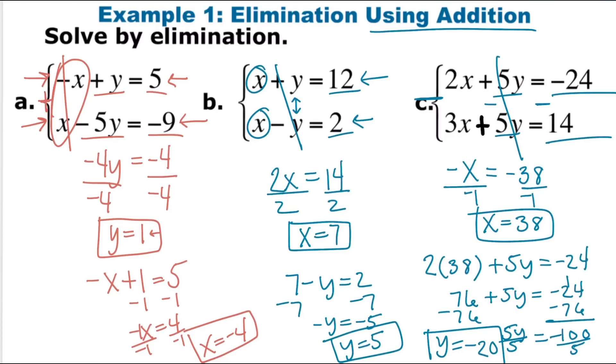Then we can plug that back in. 76 plus 5y equals negative 24 minus 76. We get 5y is negative 100 divided by 5. All of these, we did not have to multiply or divide any of our equations by anything to get them to cancel out. We either just added them or subtracted them depending on if they were opposites or if they were same. If they're opposites, you can just add everything up, they'll cancel out. If they're the same, like here, you have to subtract so they cancel out.